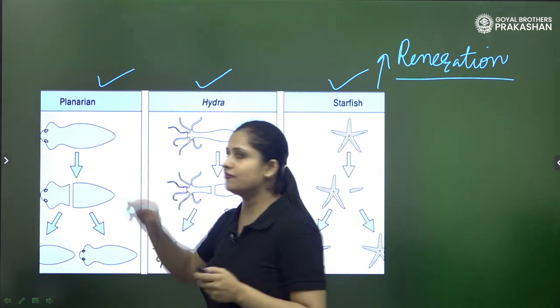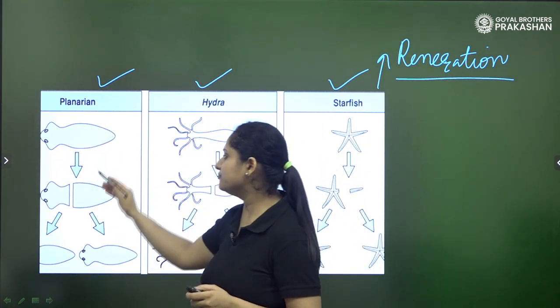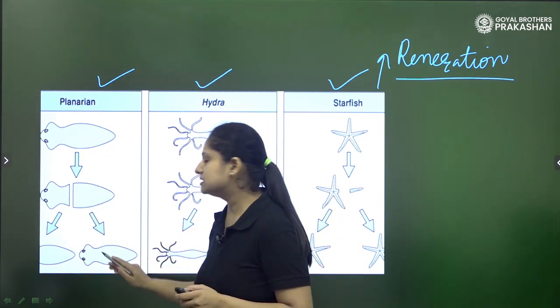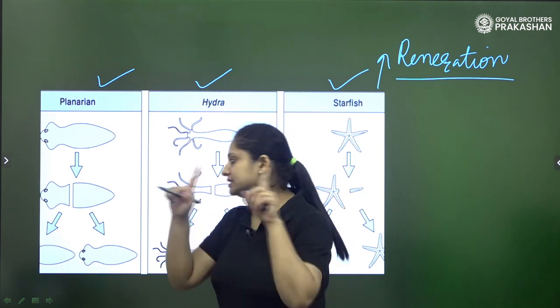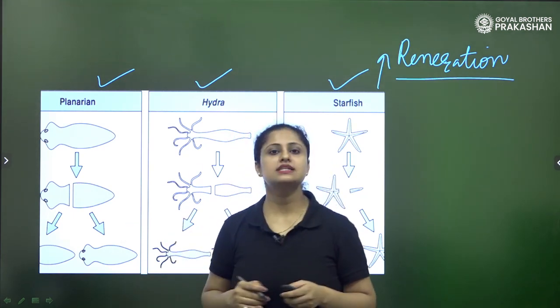For example, in case of planaria this is the entire body and if it gets cut into two pieces then both the pieces will form the entire new individual. This is how the reproduction is done in them.